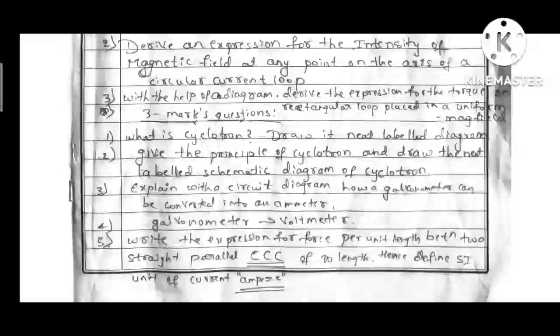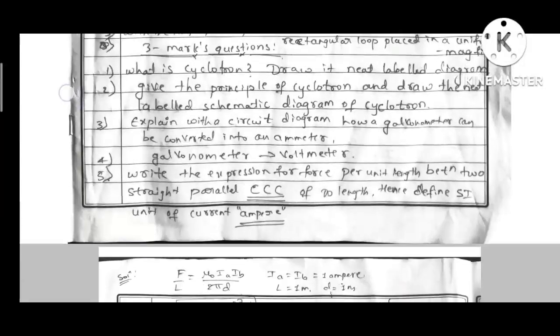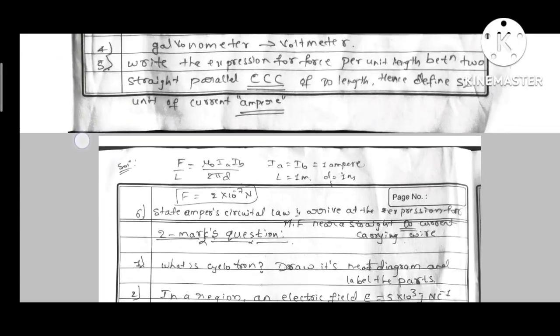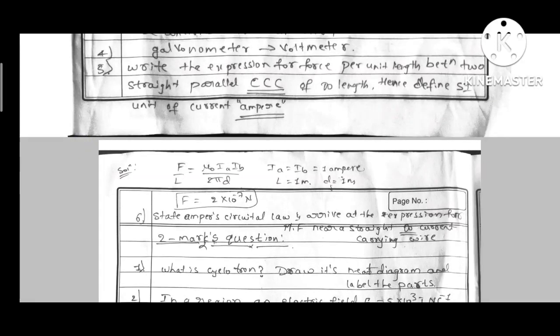Next, fifth question. Write the expression for force per unit length between two straight parallel current carrying conductors of infinite length, and hence define SI unit of current ampere.